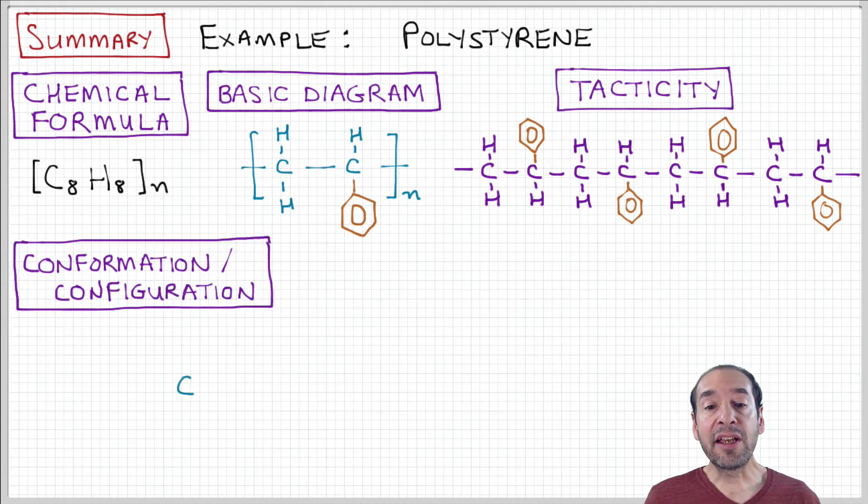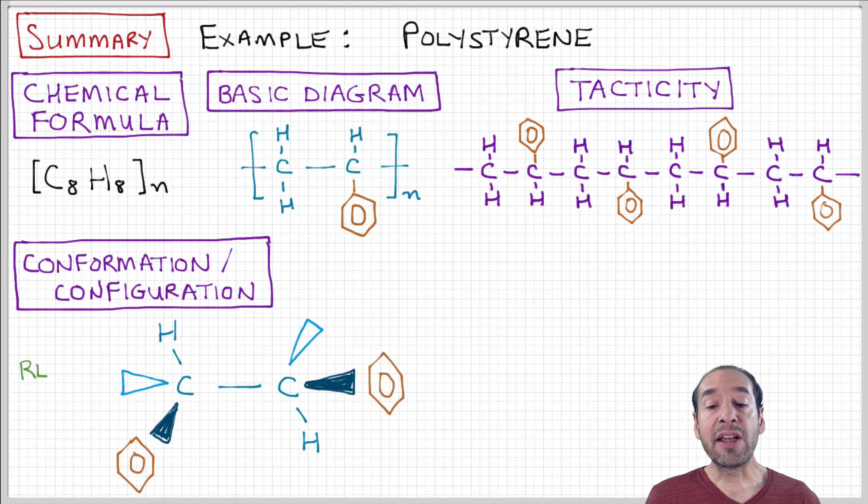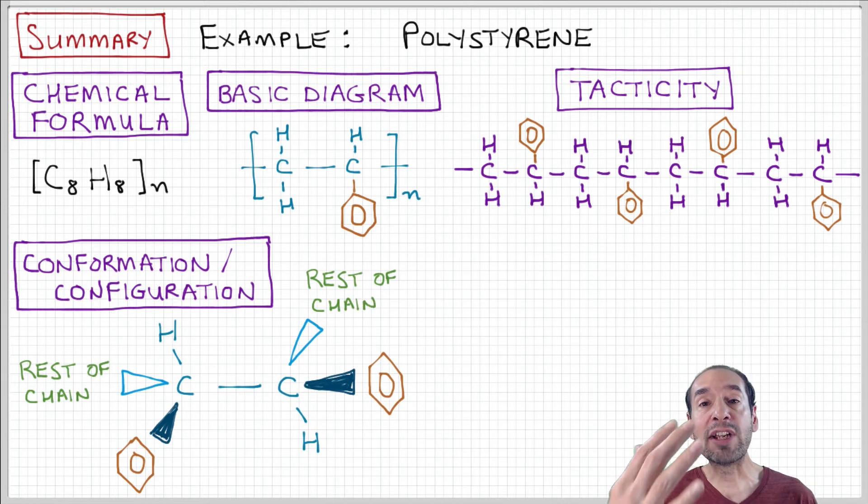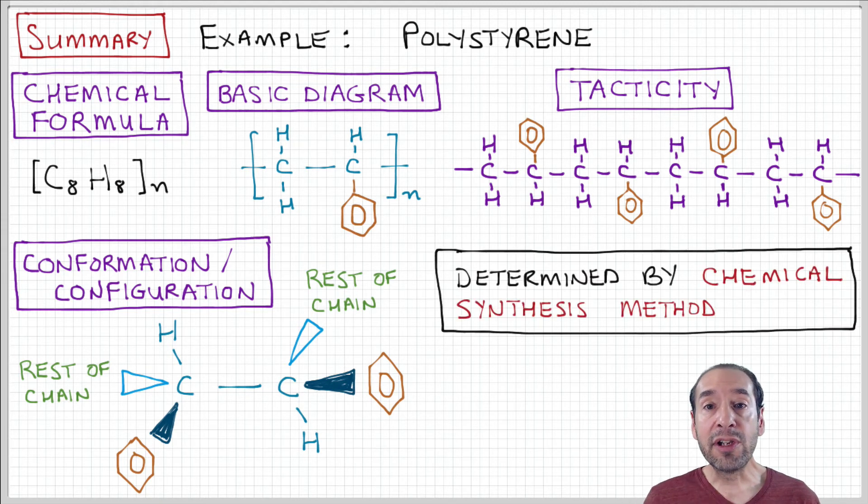Then we finally talked about conformation and configuration, which deals with the ways that these side groups are positioned in terms of rotations or translations in three-dimensional space. So these levels of structure are all important to determine the overall properties of polymer materials. We have the same material. It's all polystyrene, but it can have very different properties depending on these structural details.